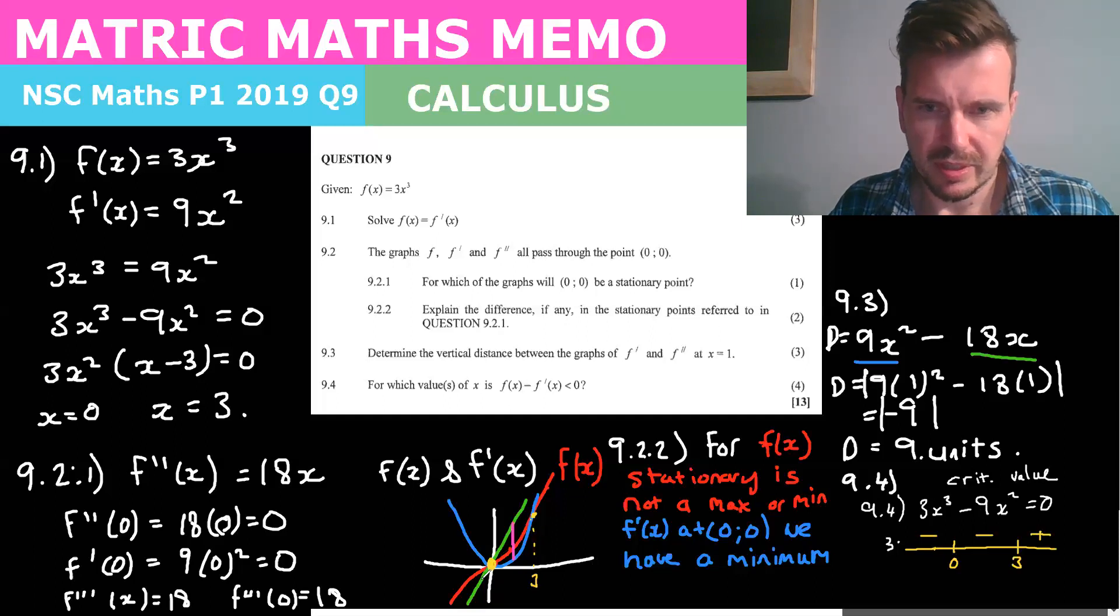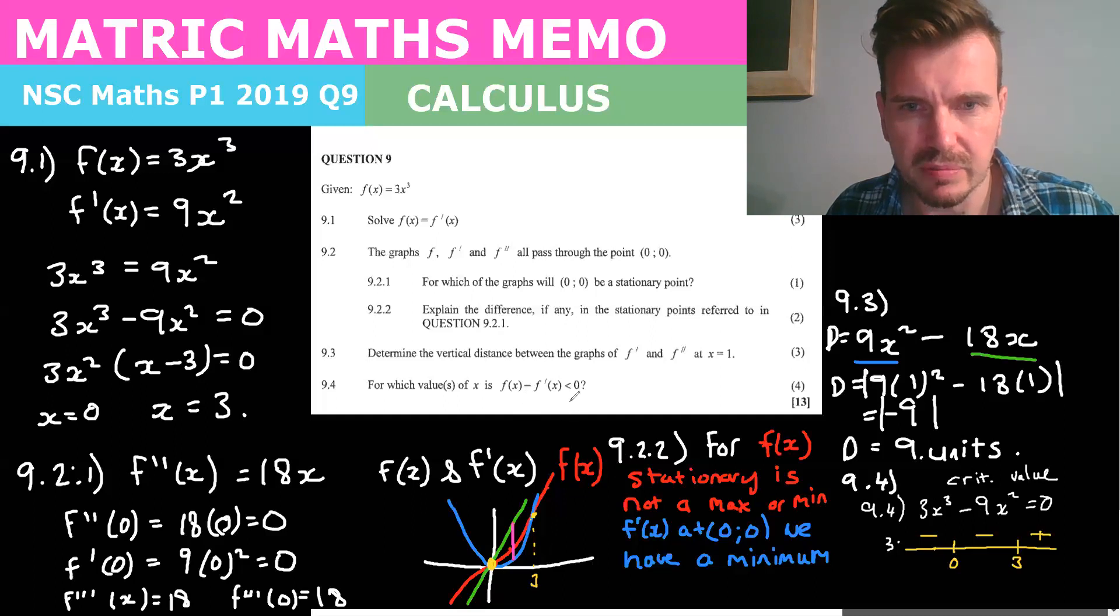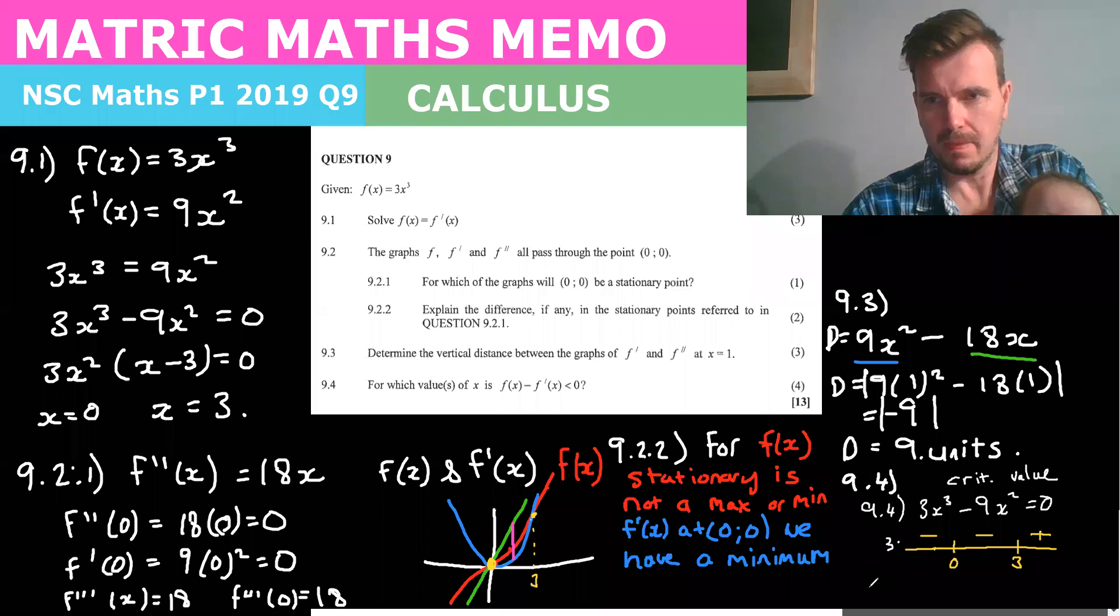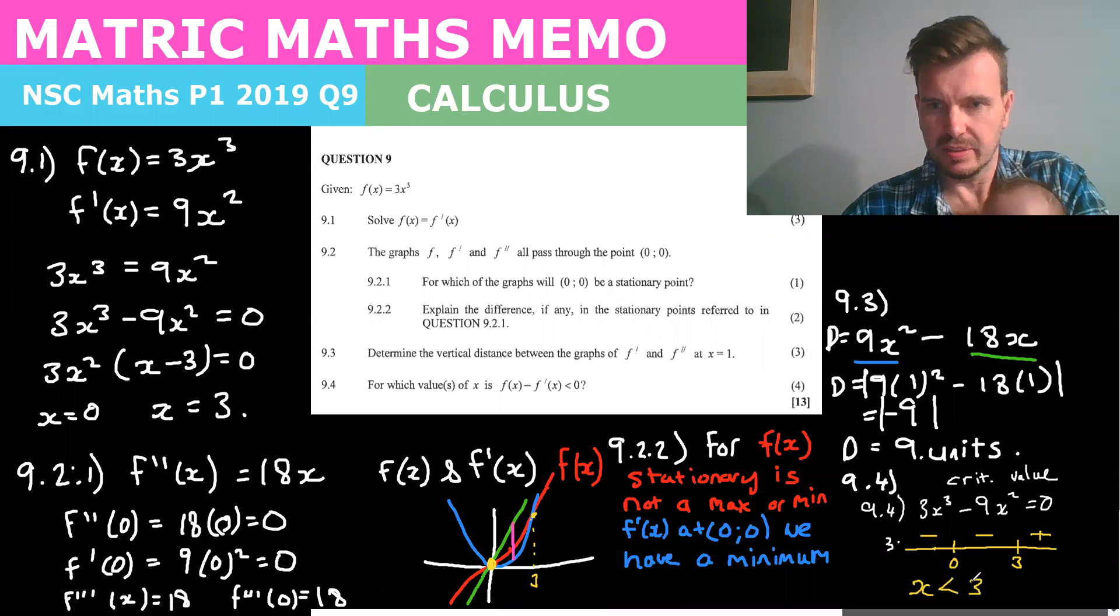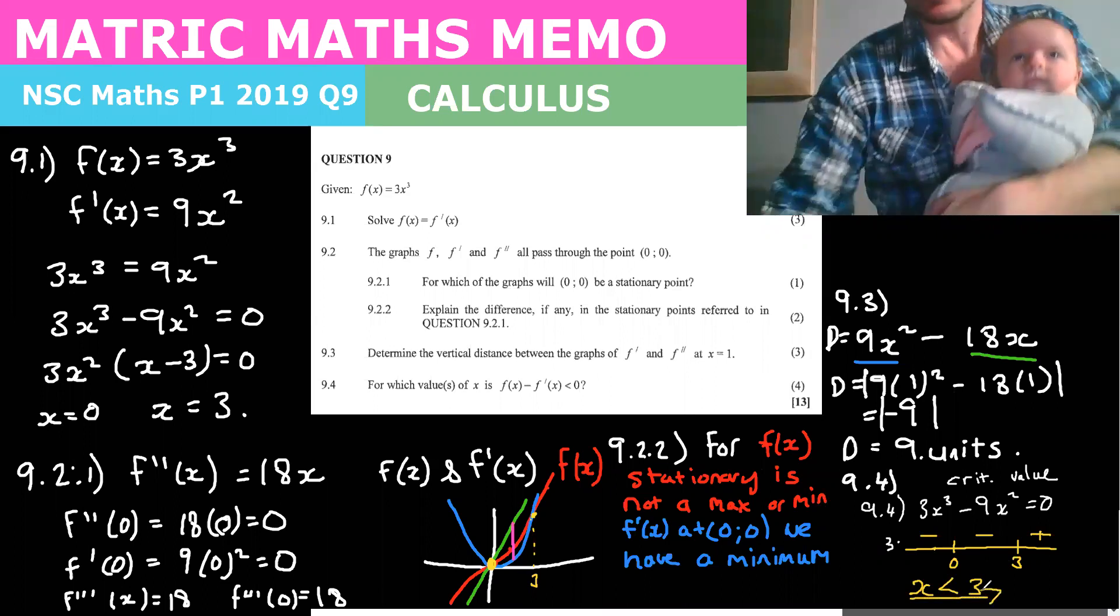So if we look down here the red is the f of x and so where it's less than zero it's going to be... Sorry I just had a baby crying so I just need to quickly finish this off. So where is it true where is it less than zero it's going to be where x is less than three. Okay we'll see you guys next time.